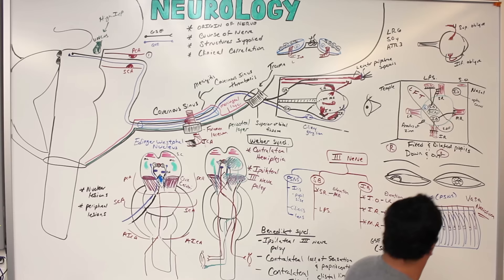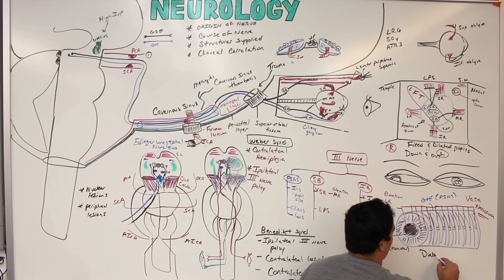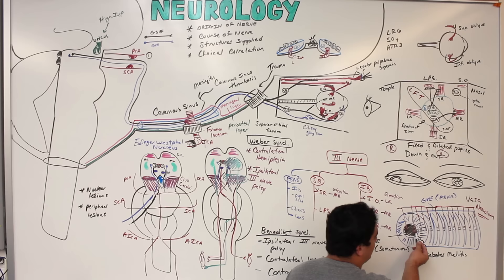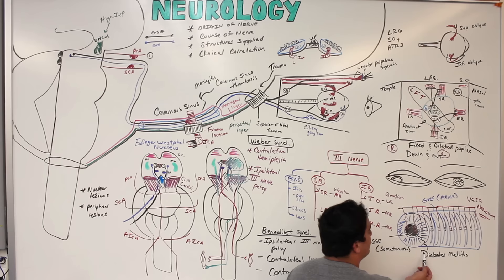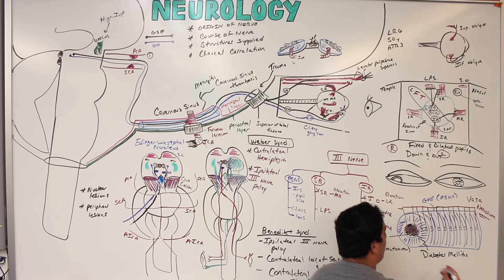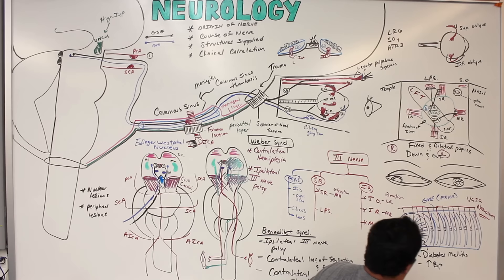Finally, regarding the vasonervorum: in conditions like diabetes mellitus or chronic hypertension, microvascular aneurysms of the tiny vessels supplying the somatomotor fibers can damage those fibers. Because the parasympathetic fibers on the outside are relatively spared, these patients develop the down-and-out eye movement without the fixed dilated pupil — a key clinical distinction from compressive causes.